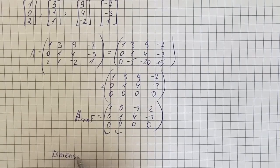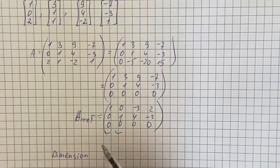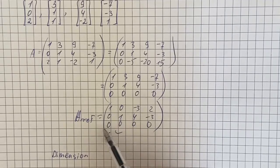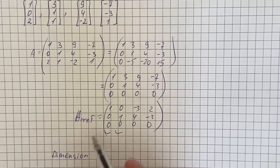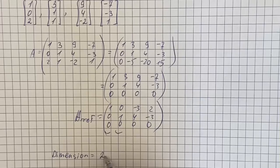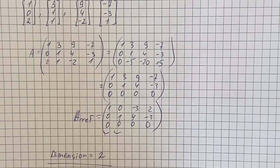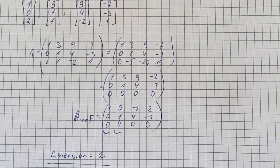Because dimension corresponds with pivot columns. So it's equal to the number of pivots, which is 2. That's going to be the answer.